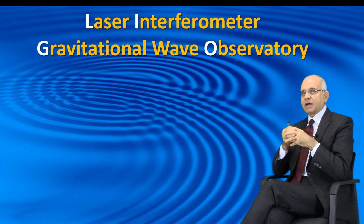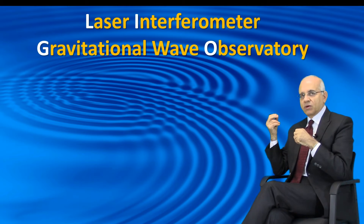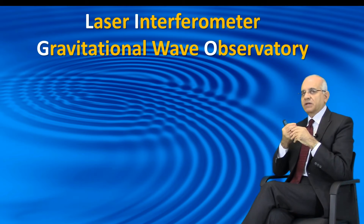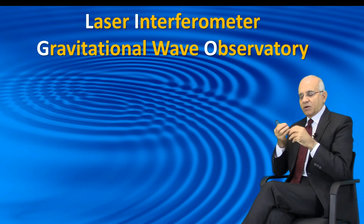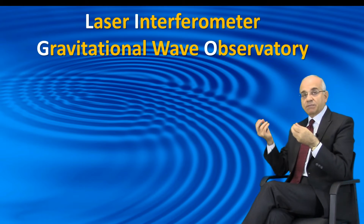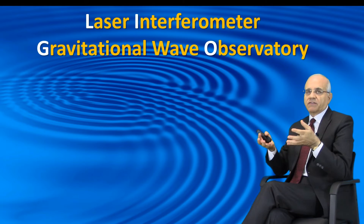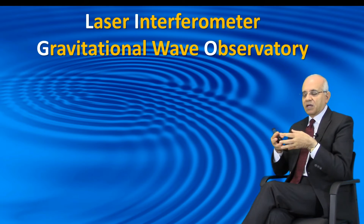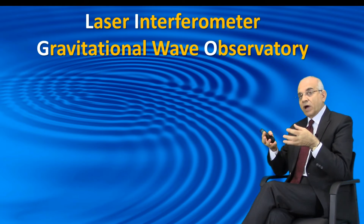Now we come to the last one, which is interferometer. What does that mean? Well, 'meter' means measuring, and 'interference' — you know interference — so interferometer means measuring interference. Interference of what? Of waves.